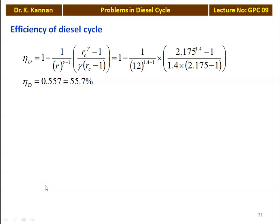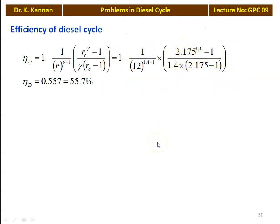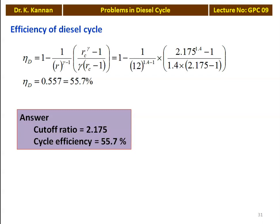The Diesel cycle efficiency: eta equals 1 minus (1 by R to the power gamma minus 1) into (Rc to the power gamma minus 1) divided by (gamma into Rc minus 1). Substituting: 1 minus (1 by 12 to the power 0.4) into (2.175 to the power 1.4 minus 1) divided by (1.4 into 1.175) equals 0.557, which is 55.7%. The cutoff ratio equals 2.175 and the efficiency of the cycle is 55.7%.